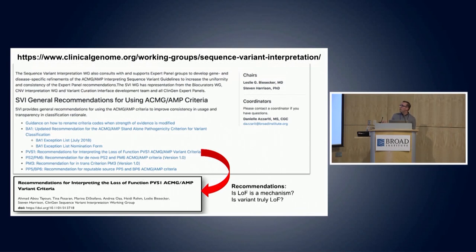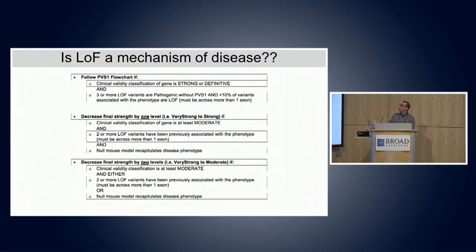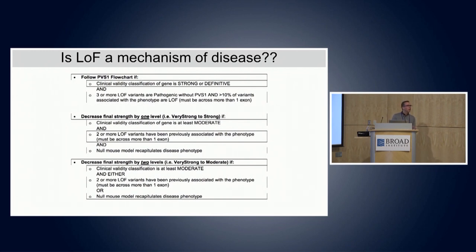To help with PVS1, the SVI published a paper last year with recommendations and a flowchart for applying this criterion, including considerations for determining if loss of function is a mechanism. Our proposal: to apply PVS1, the clinical validity classification of the gene should be strong or definitive, and loss of function variants should be known to cause disease — specifically, at least three or more loss of function variants should be pathogenic without applying PVS1, meaning there's already sufficient other evidence that loss of function is causing disease within this gene.